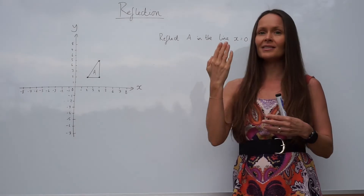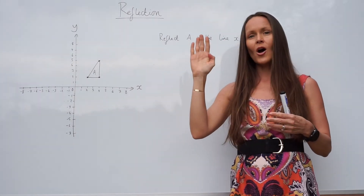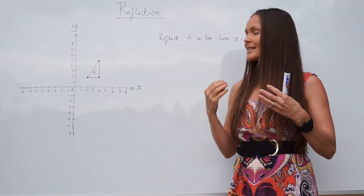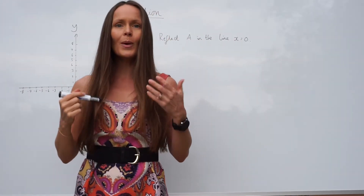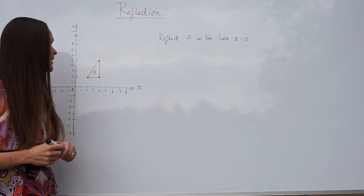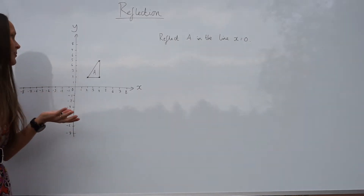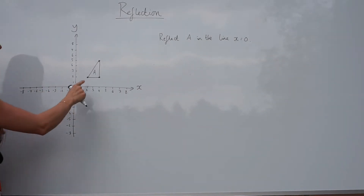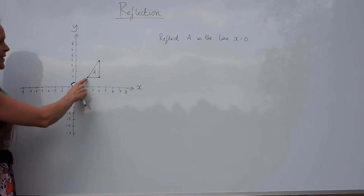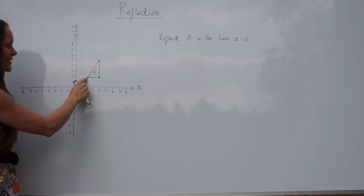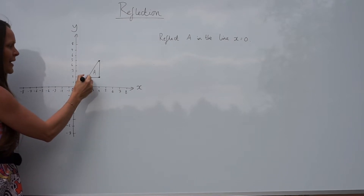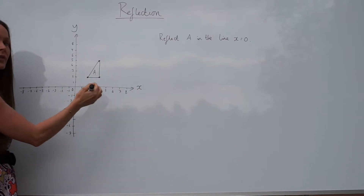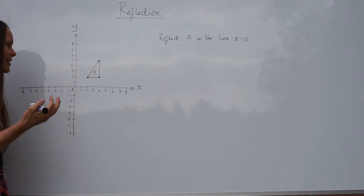When we do that, the shape flips across that line. It's the same shape, the same size, but it flips across the mirror line. When you do a reflection, it's a good idea to take one of the points on your shape — I'm going to take the bottom left-hand corner here. You can see it's exactly two units away from the y-axis horizontally. The new reflected point should be two units but on the opposite side of the mirror line.